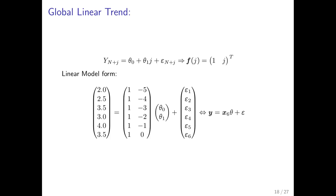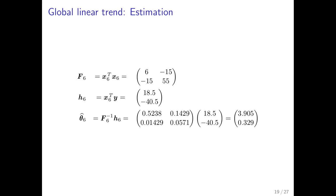But that is the linear model way. What we will do here is to do it the global linear trend way. By first calculating F_6. Because with six observations. And h_6. And then we will solve for theta. So the estimate at time six is 3.9 with a slope of 0.33.